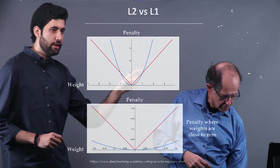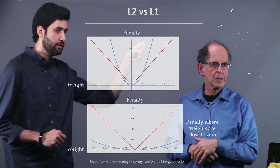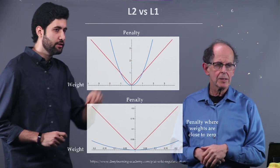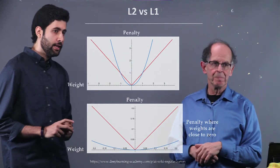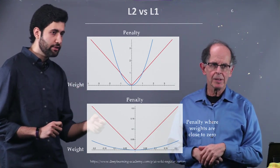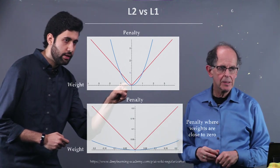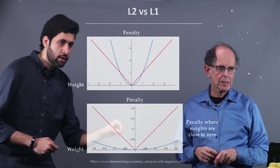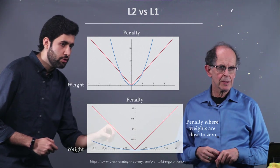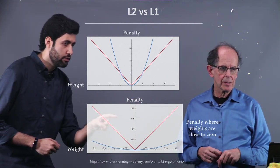But for L1 regularization, the rate of the speed of descent is always constant. And this is more important when we are close to zero, when we are in this area. If you magnify that here. If you are close to zero, the rate of descent is still constant for L1.